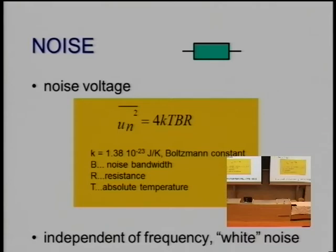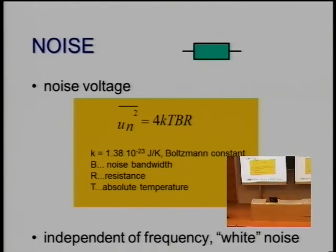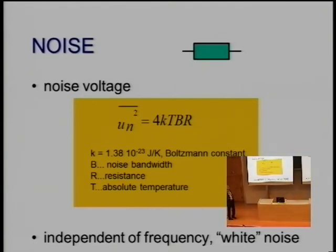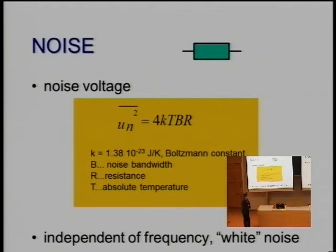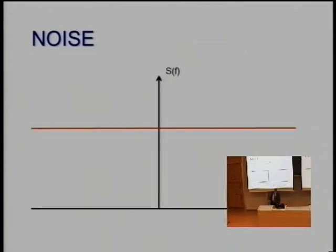So when we take the simplest noise source, this is a resistor. And if we put here some measurement device, power meter, spectrum analyzer, then the voltage here is un squared. And the average of that is four times the Boltzmann constant times the absolute temperature times the bandwidth times the resistance. And when we calculate the power, power is un squared over r, so the r cancels out.